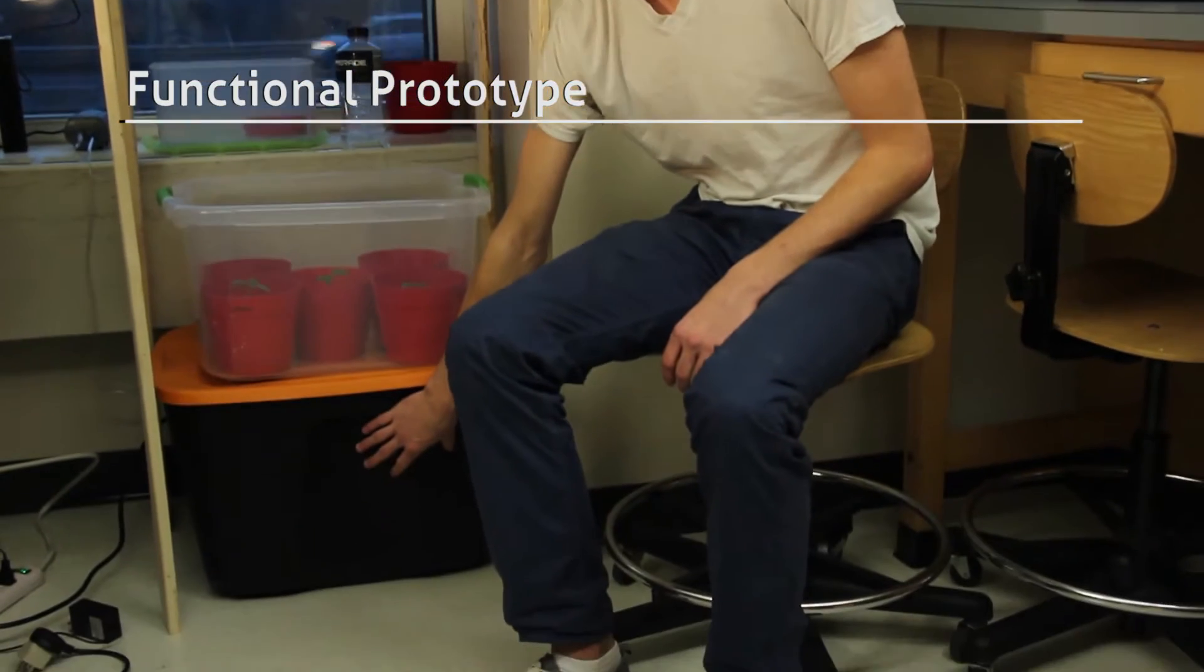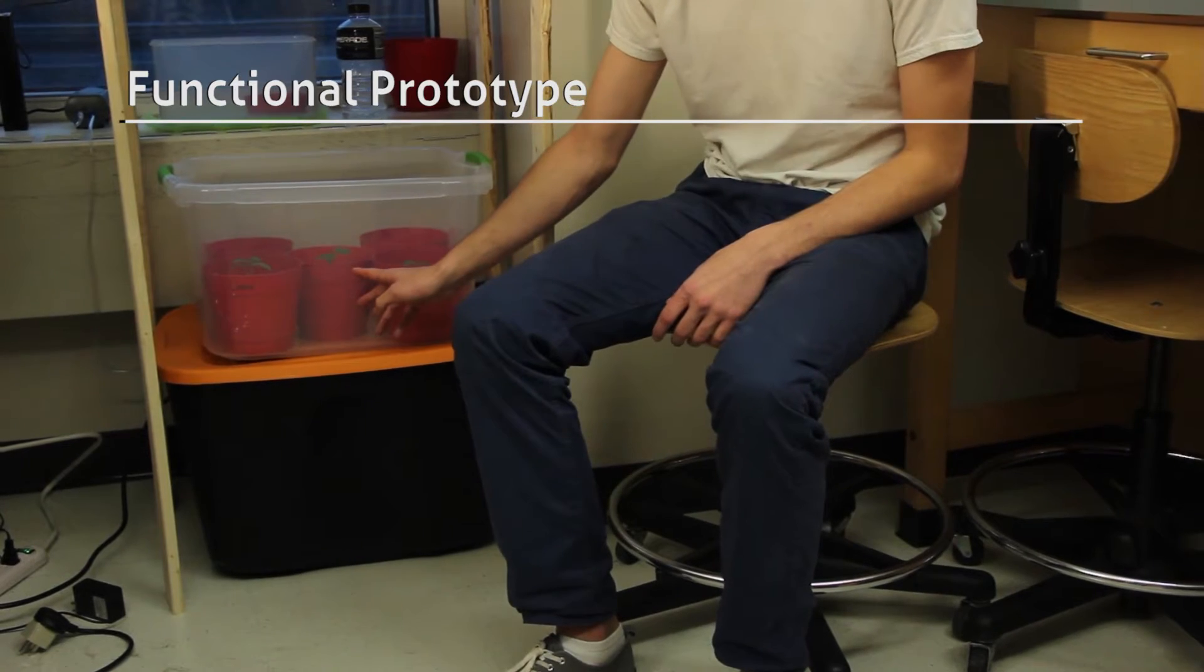At the heart of the GrowBox is a hydroponic system. For this, we've chosen an ebb and flow system. What that entails is a reservoir periodically pumping water up to the flood tray where the plants reside. This will happen about two to three times a day for a half an hour each.